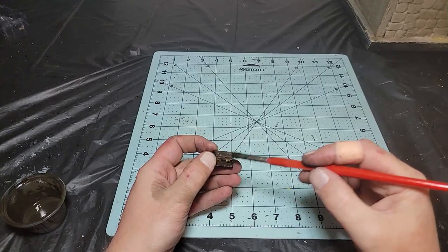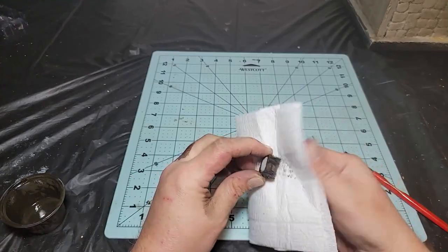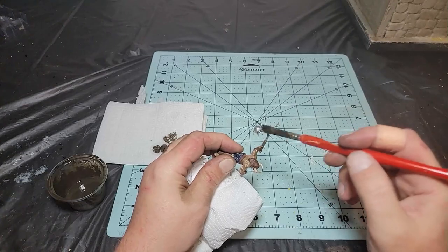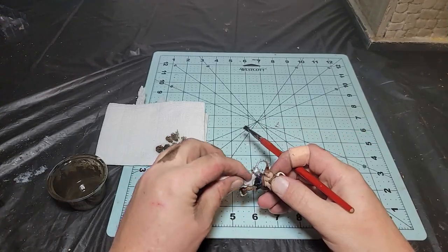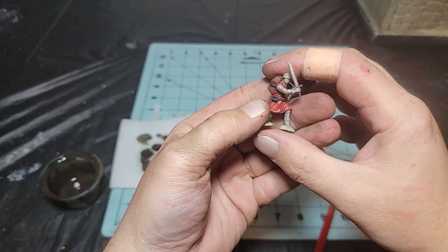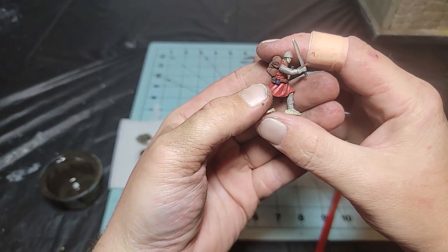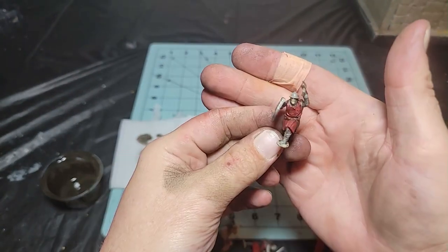I took the same wash and gave all of the minis a light coat as well, making sure to repeat the earlier process and use a paper towel to soak up the excess. The end result is clothing that looks worn, skin that looks dirty, and metal that looks aged from battle.